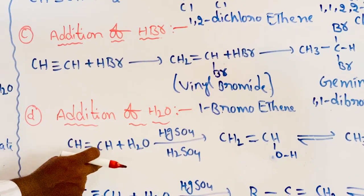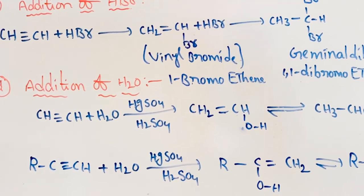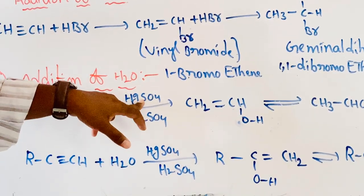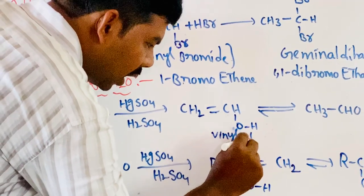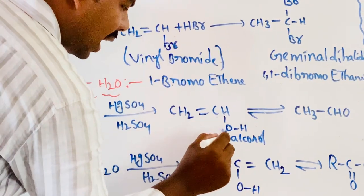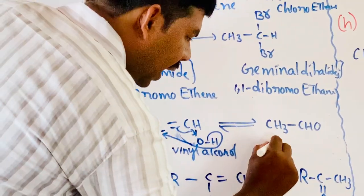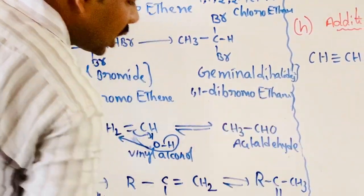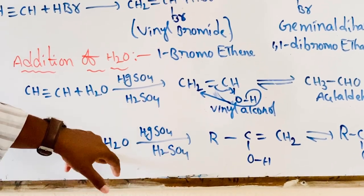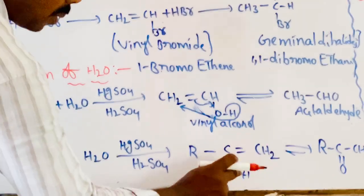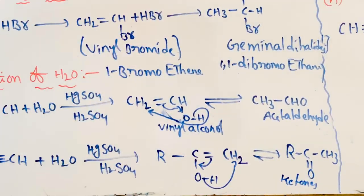Next, addition of water. Alkynes undergo hydration — addition of water — in the presence of mercuric sulphate and sulphuric acid to give aldehyde and ketones. Ethyne reacts with water in the presence of sulphuric acid and mercuric sulphate to give vinyl alcohol. This vinyl alcohol undergoes proton rearrangement to give acetaldehyde. The common name is acetaldehyde; the IUPAC name is ethanal. For higher alkynes, reaction with water in the presence of mercuric sulphate and sulphuric acid gives an unstable compound, which undergoes proton rearrangement to give ketones. Hence all higher alkynes give ketones.